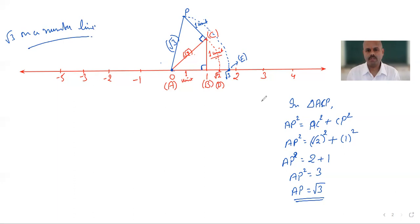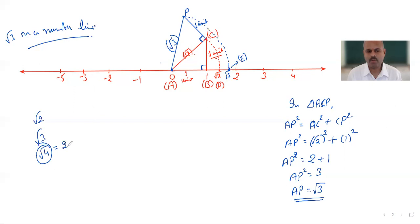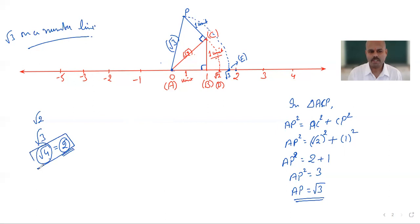So we have done √2 and √3. Now if you talk about √4, that is equal to 2 itself, because the square root of 4 is 2, and 2 is already on the number line. So for √4 we don't need any special construction.